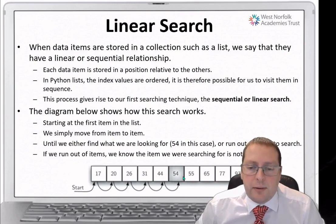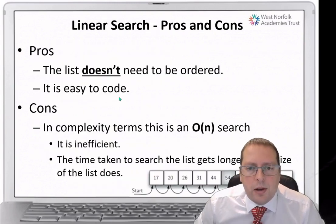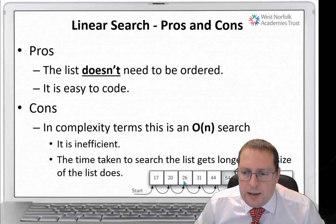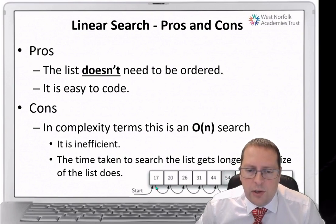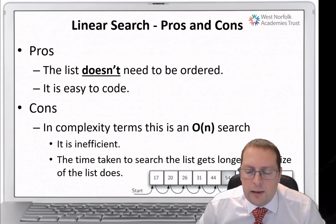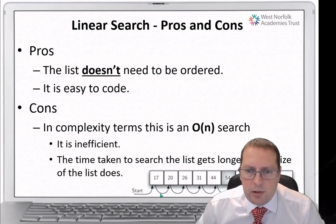Linear searches have advantages and disadvantages. One advantage is that the information doesn't need to be in any particular order — the numbers don't need to be ordered and we'll still eventually find the item we want. Another advantage is that you can search for items that have no order at all, such as colours: blue, green, red, orange, yellow, pink, maroon. The order of those colours makes no difference — you just move along from one to the next until you find the item.